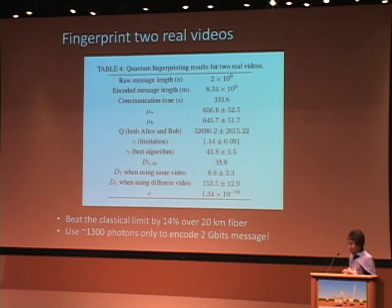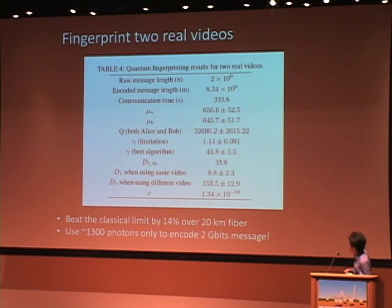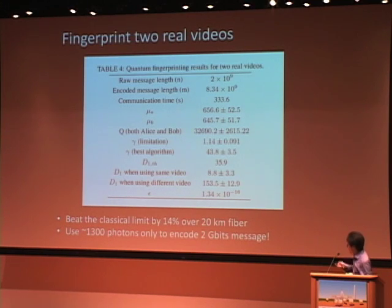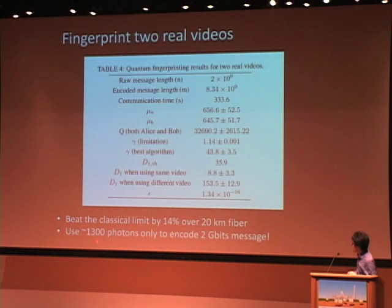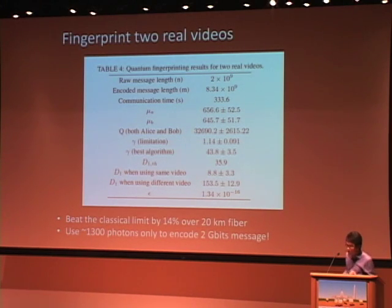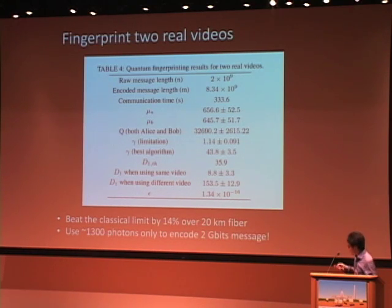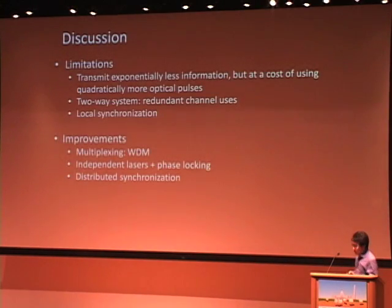Besides experiments on artificial messages, we also fingerprinted two real videos. Each video file is about two gigabits in length, transmitted over 20-kilometer fiber. We beat the limit by about 14%. One important feature: in our experiment, we used only 1,300 photons to encode a two-gigabit message — a very small number of photons to encode a large message.